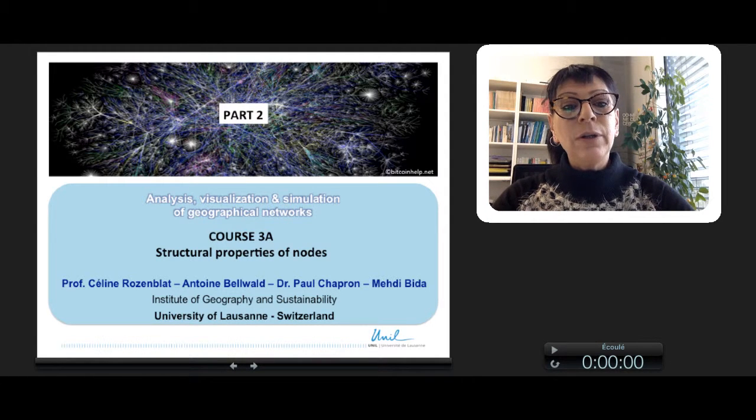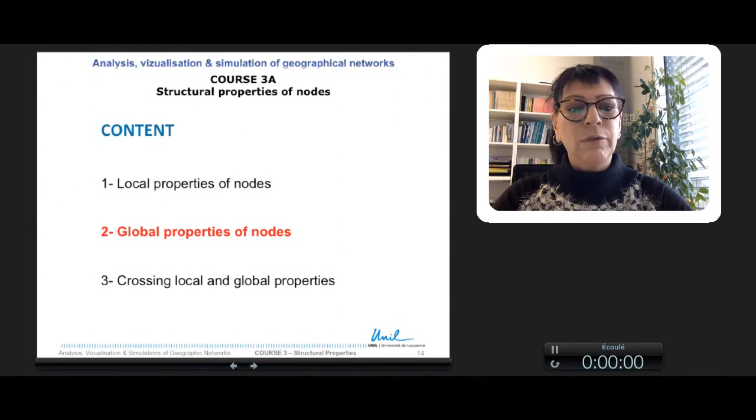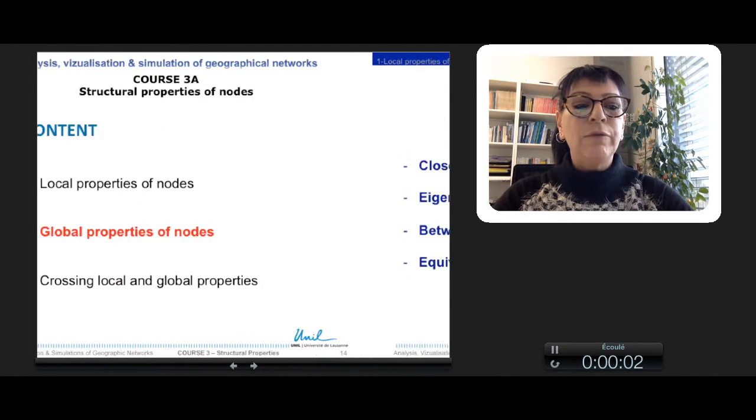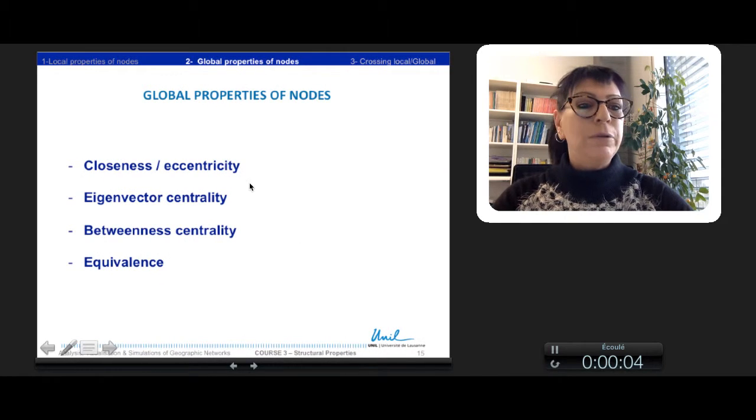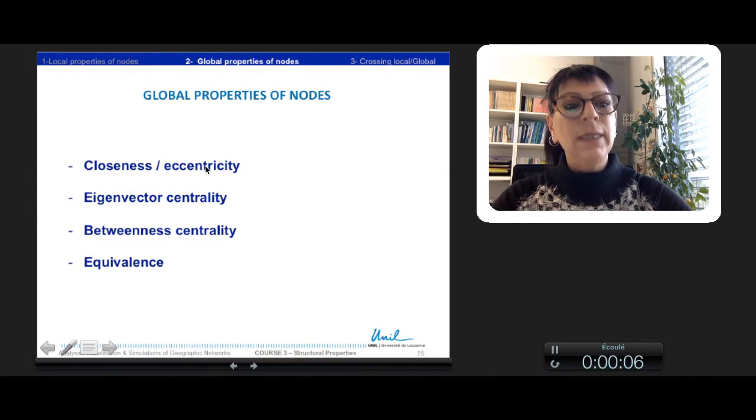In continuation of the structural properties part, we will see now the global properties of nodes. We will treat four main parts: first, closeness eccentricity; second, eigenvector centrality; third, betweenness centrality and equivalence.